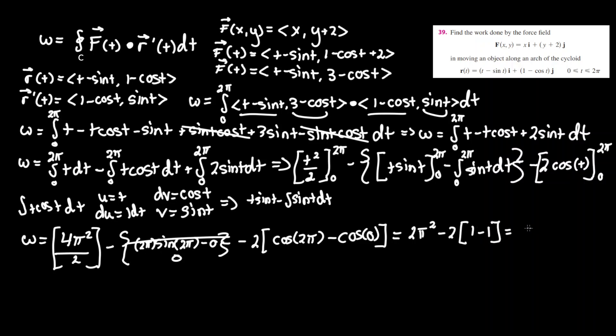Which equals 2pi squared minus 2 times 0, you get rid of that term, and that leaves us with our final answer of work equaling 2pi squared.